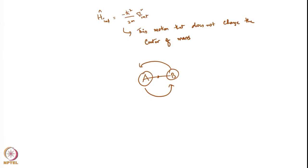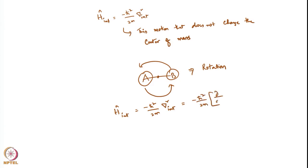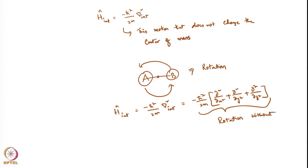So H_internal = −(ℏ²/2μ)(∂²/∂x² + ∂²/∂y² + ∂²/∂z²) represents rotation without changing the center of mass. We will stop here and continue in the next class. Thank you.